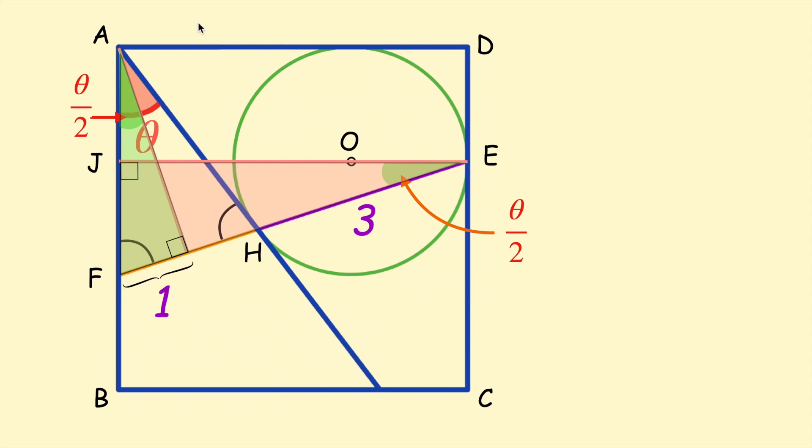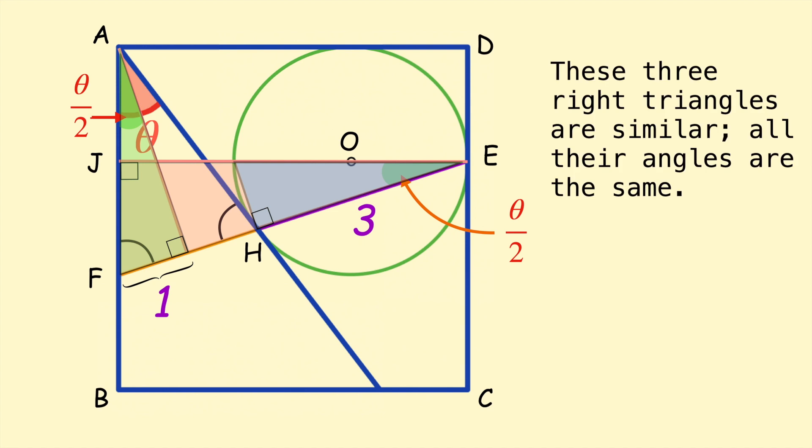Again because we bisected that isosceles triangle, we cut the angle in half and we cut the base in half. So in relation to the other lengths this length is 1, and the other right triangle we're going to create is inside the circle here, inside the semicircle, that also has an angle of theta on 2. Because all of the angles are the same, we've created three similar right triangles.